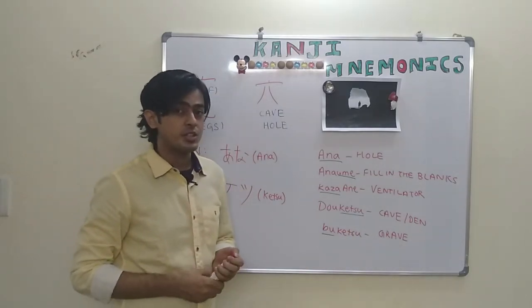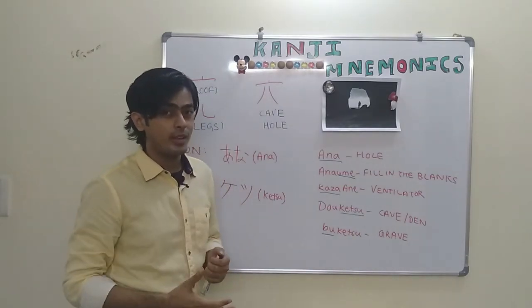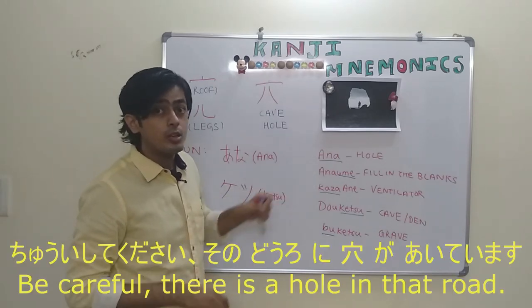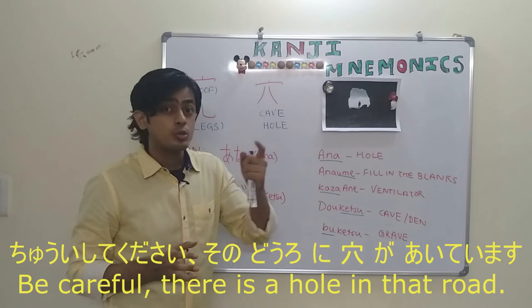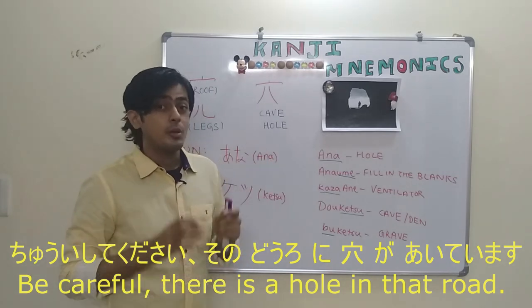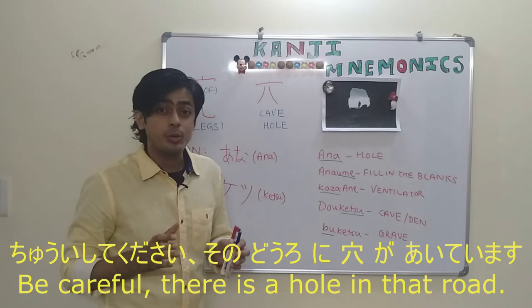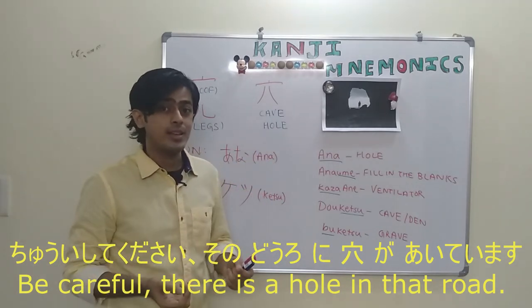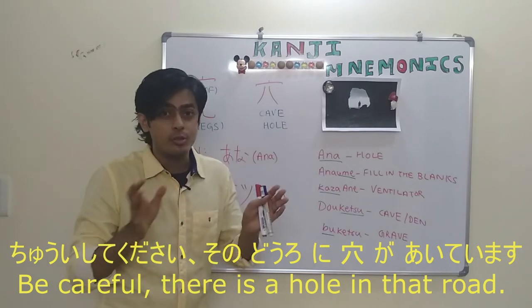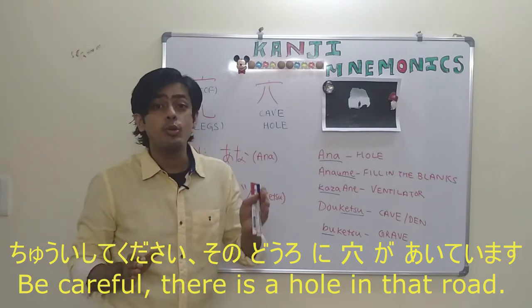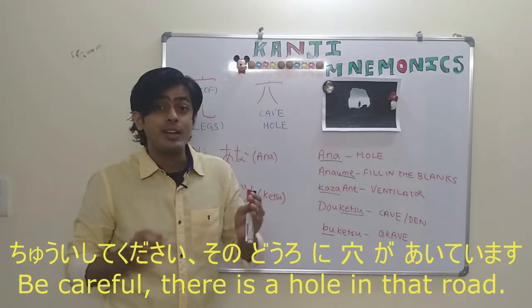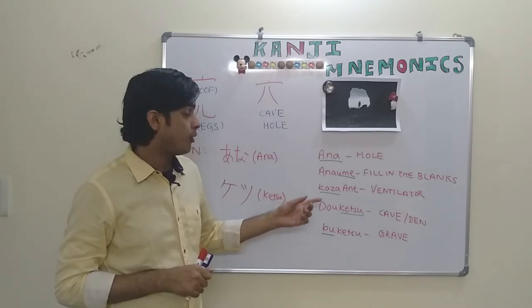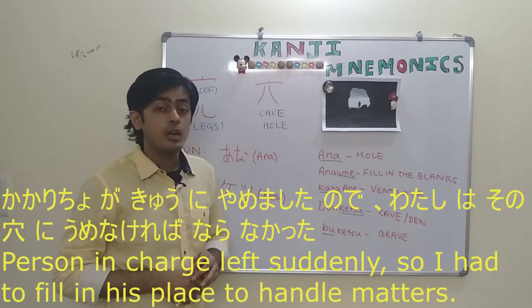Now we will go to the next section which is sentence making. We can use this particular word ana in a sentence like: Chui shite kudasai, sono douro ni ana ga aitemasu, which can be translated as be careful, there is a hole in that road.